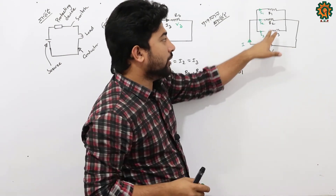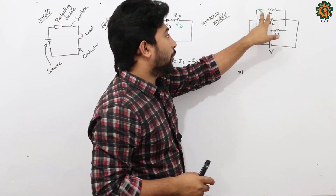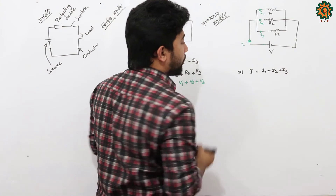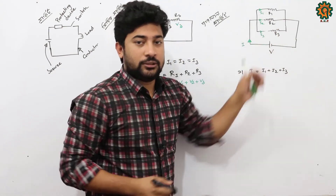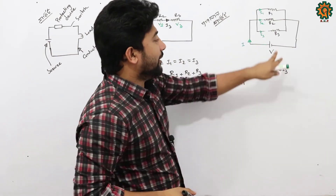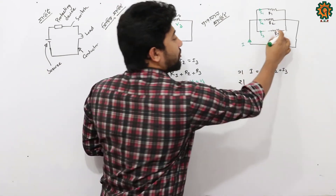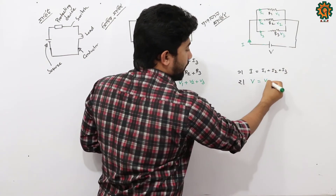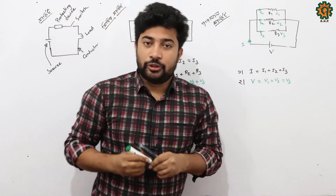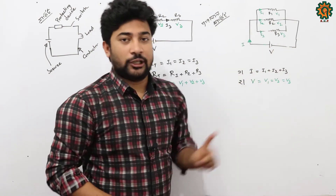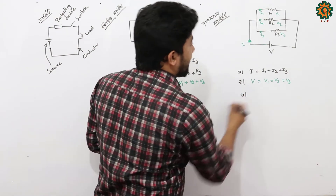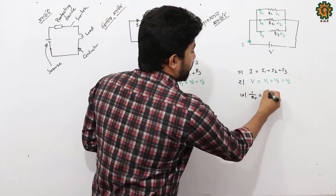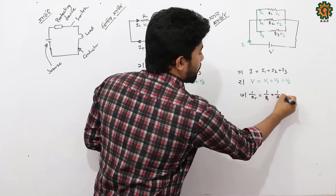The three branches are called i3, the second branch is called i2, and the first branch is called i1. So the total current is i1 plus i2 plus i3. The resistance formula is 1/R1 plus 1/R2 plus 1/R3.